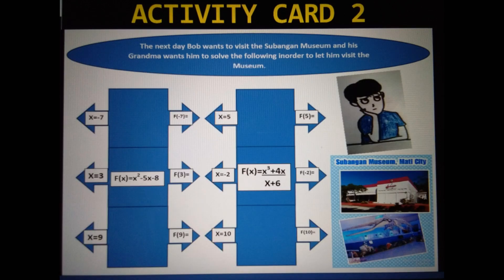Activity Card 2. The next day, Bob wants to visit the Subangan Museum, and his grandma wants him to solve the following in order to let him visit the museum.